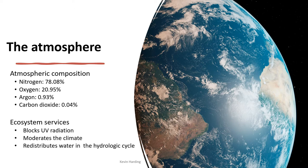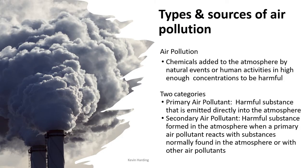The atmosphere also blocks out ultraviolet radiation to protect us, it moderates the climate to help keep temperatures at a similar level, and it redistributes water in the water cycle. Without the atmosphere, clouds wouldn't form over oceans and get blown over onto land to rain.